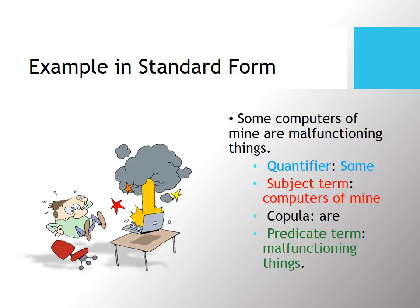Or, if somebody says 'one of my computers is malfunctioning,' that would mean 'some computers of mine are malfunctioning things.' We had to adjust the terms grammatically to make it work, but the quantifier is 'some,' the subject term is 'computers of mine,' 'are' is the copula, and the predicate term is 'malfunctioning things.' Highlighted in the sentence, you can see all four elements appear in our standard form translation.